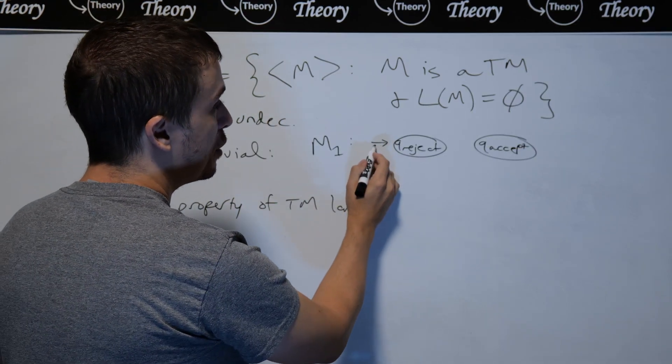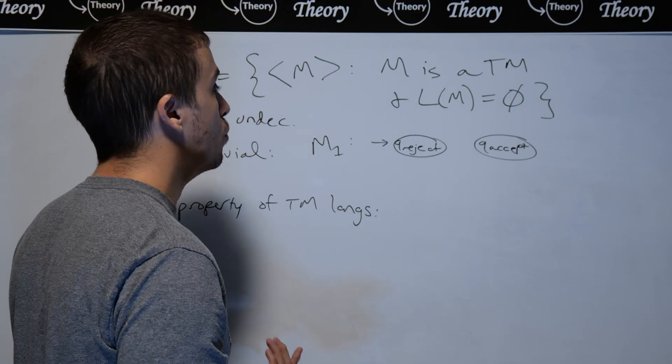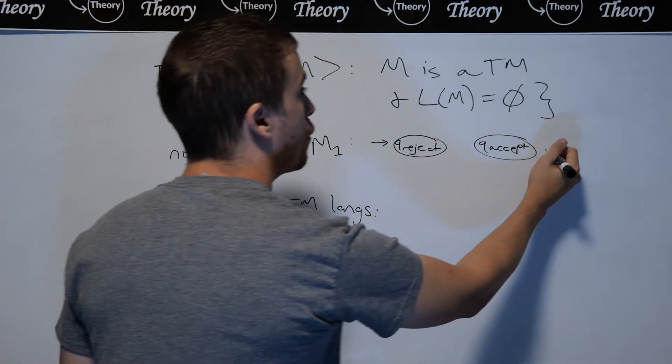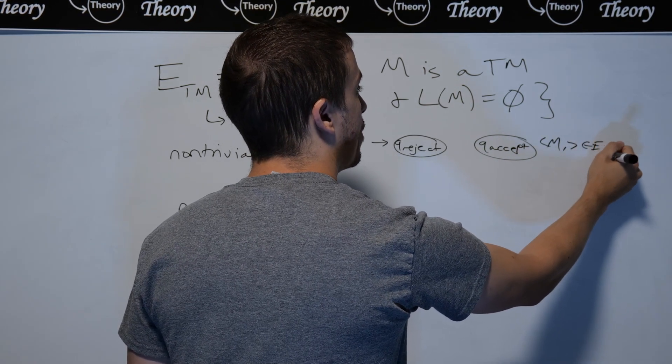And then therefore, since the machine starts here, therefore every single string is going to be rejected. And so therefore, M1, the description of it, is in ETM.